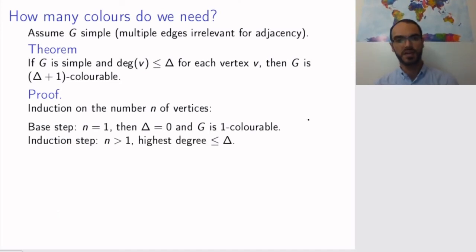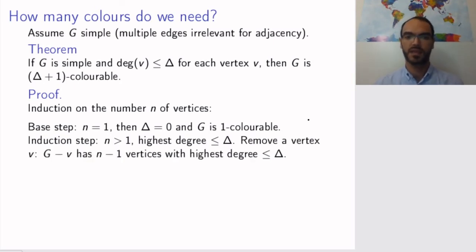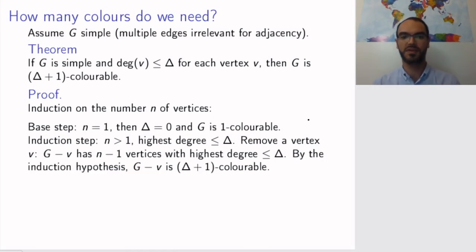For the induction step, assume that you have n vertices greater than one, and that the highest degree is delta. We need to show that it's enough to use delta plus one colors. So remove a vertex. Now when you remove the vertex v, the remaining graph has n minus one vertices, and certainly the highest degree is at most delta. The highest degree can go down if you remove a vertex, but of course not go up. So this new graph that you have created has one vertex less. Since we're proving by induction, the induction hypothesis tells us that this graph is (delta + 1)-colorable.